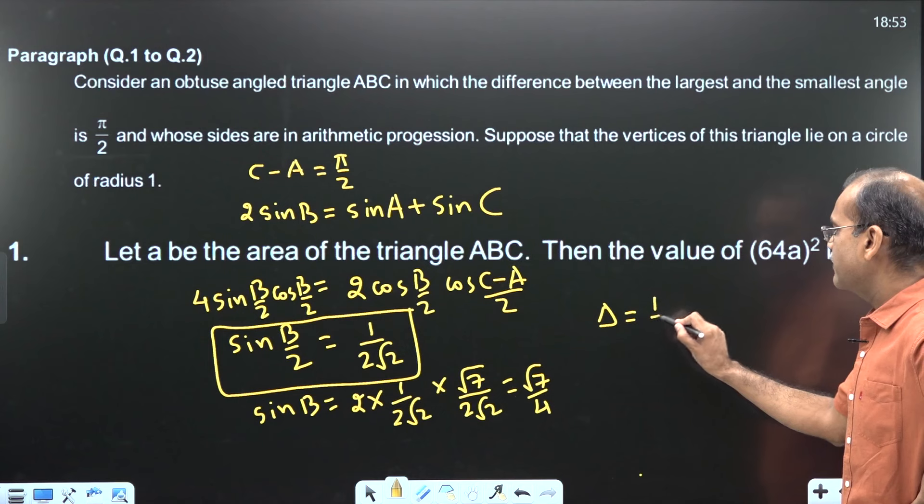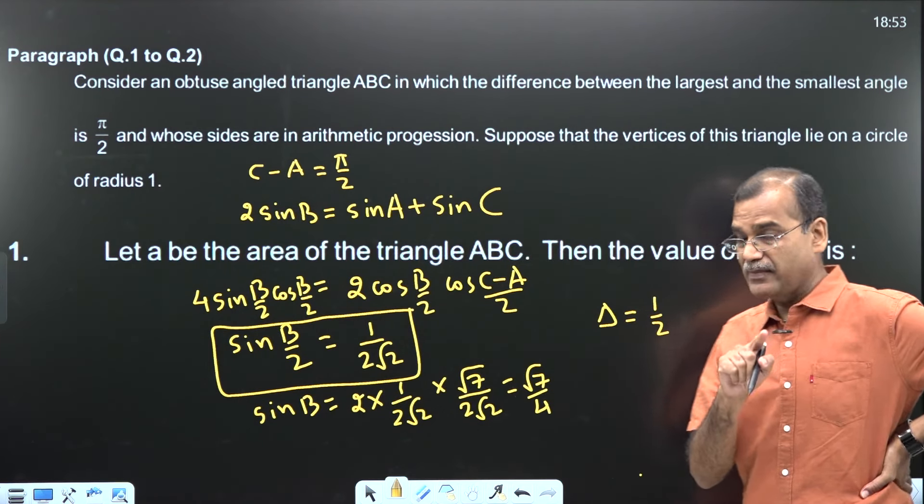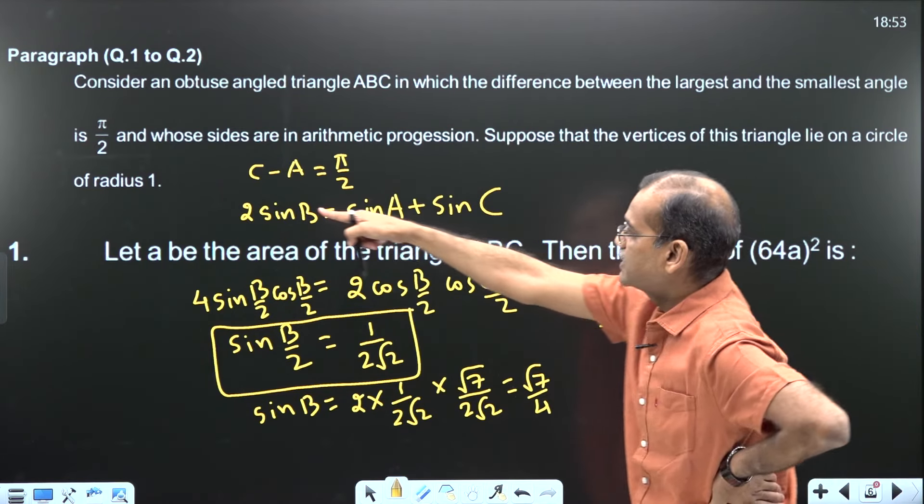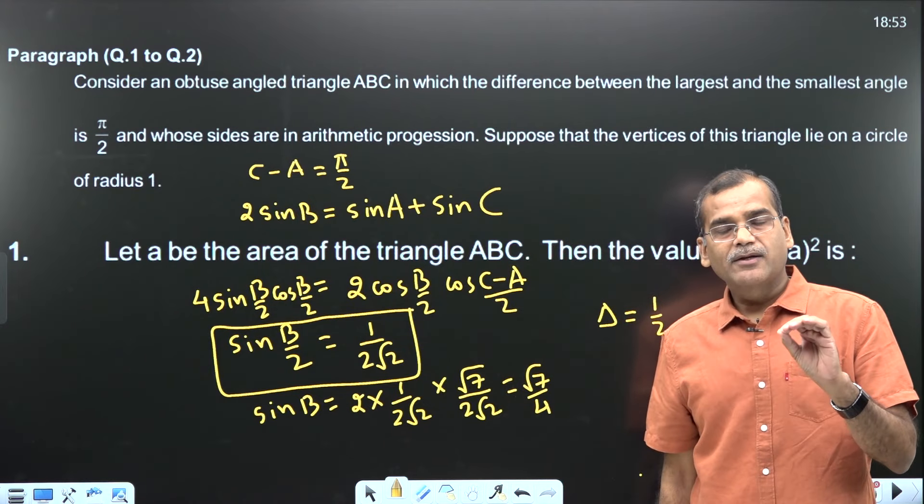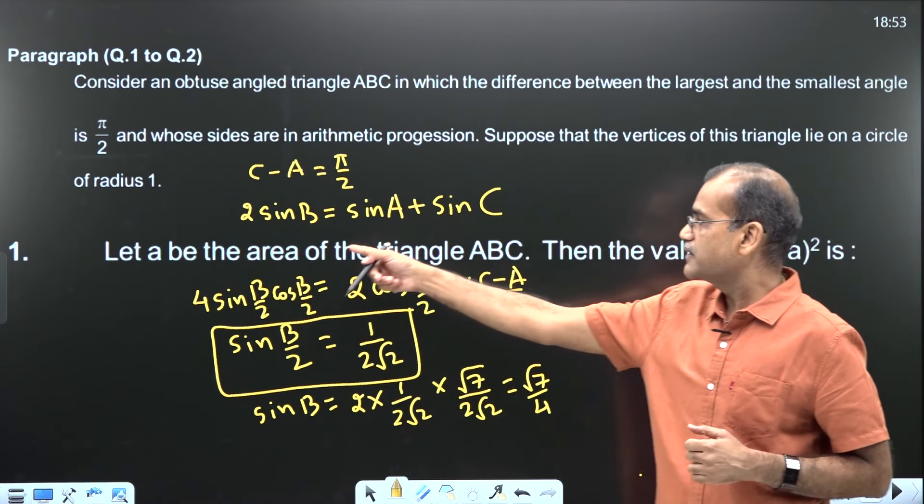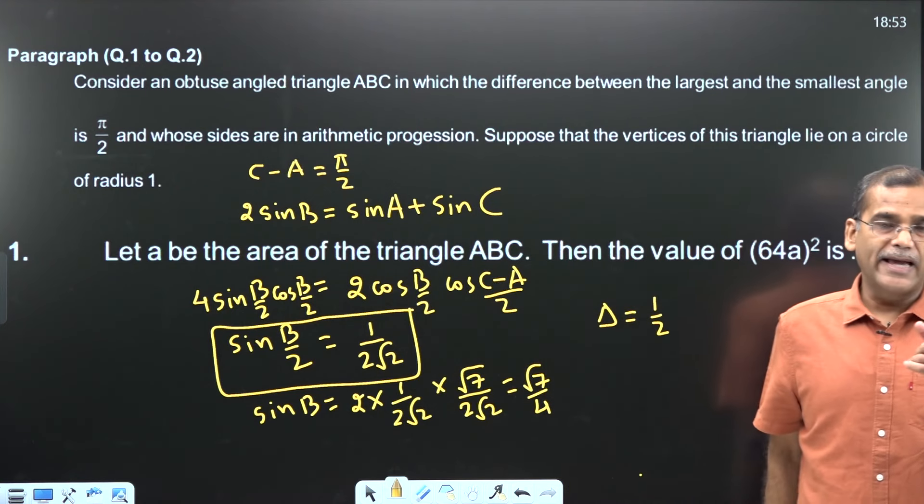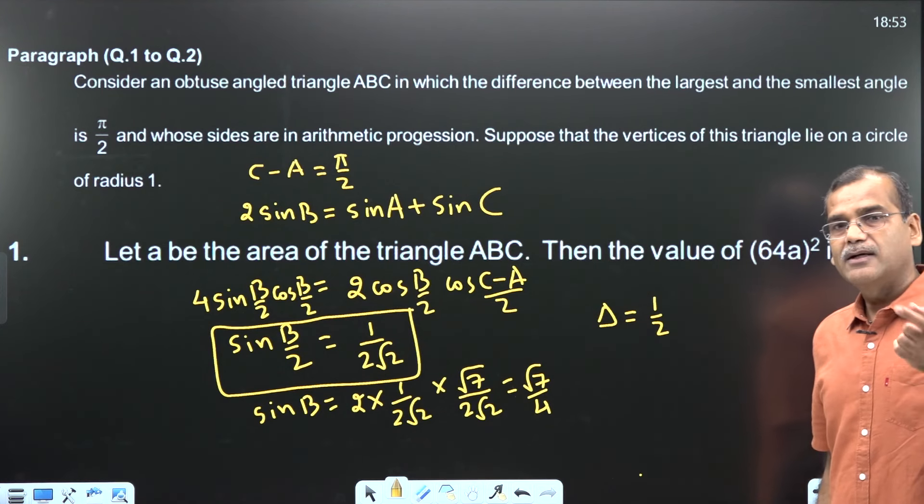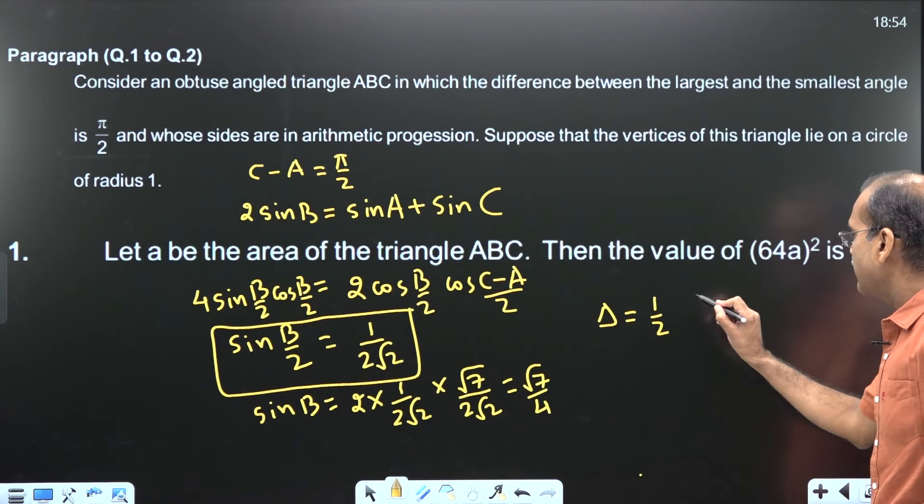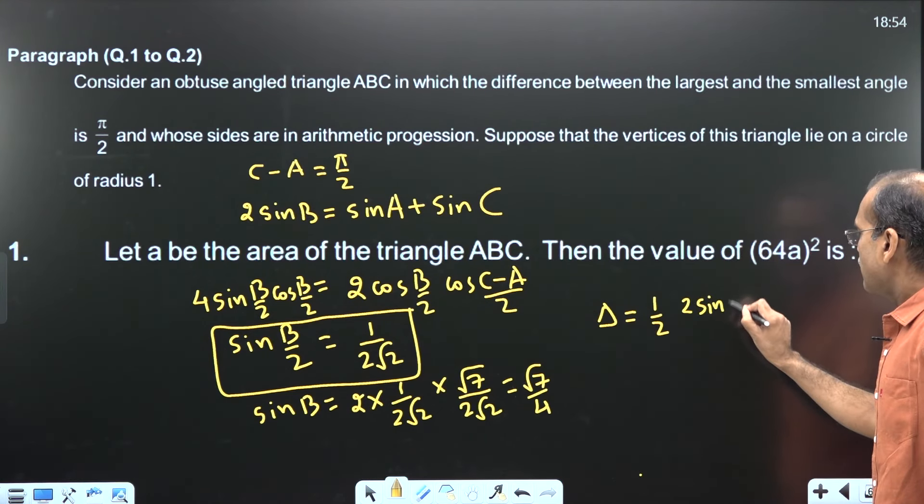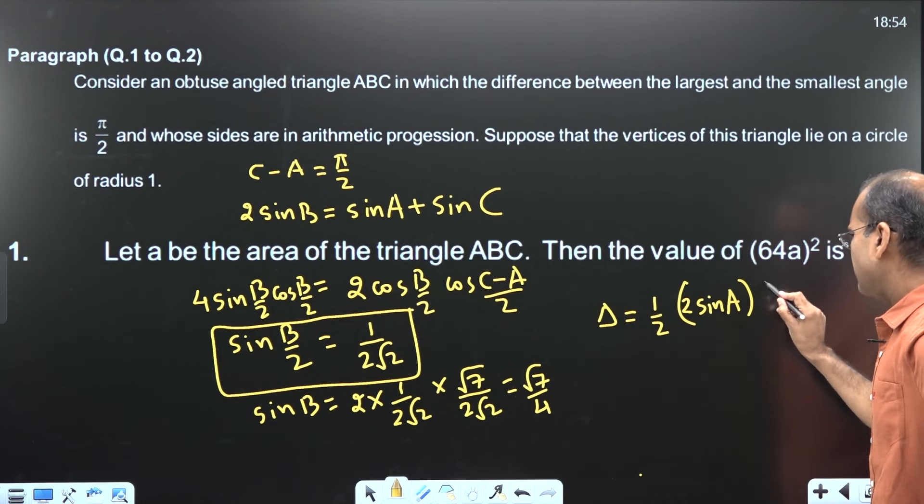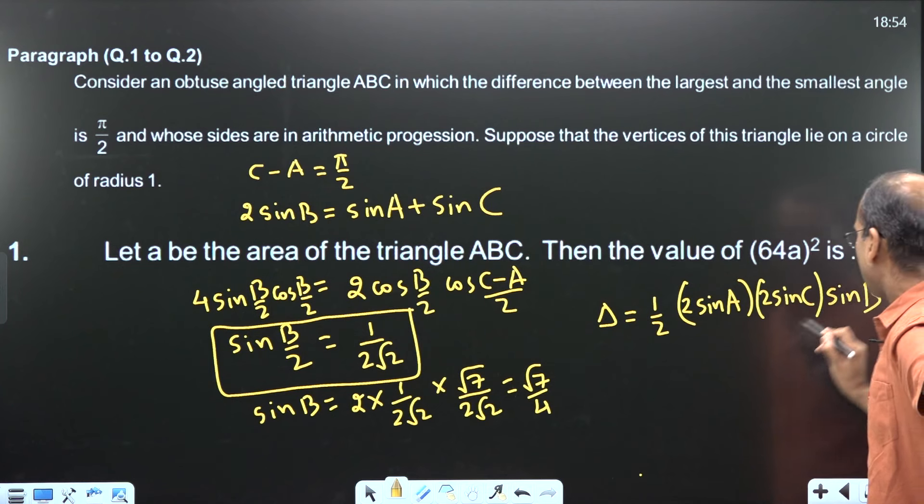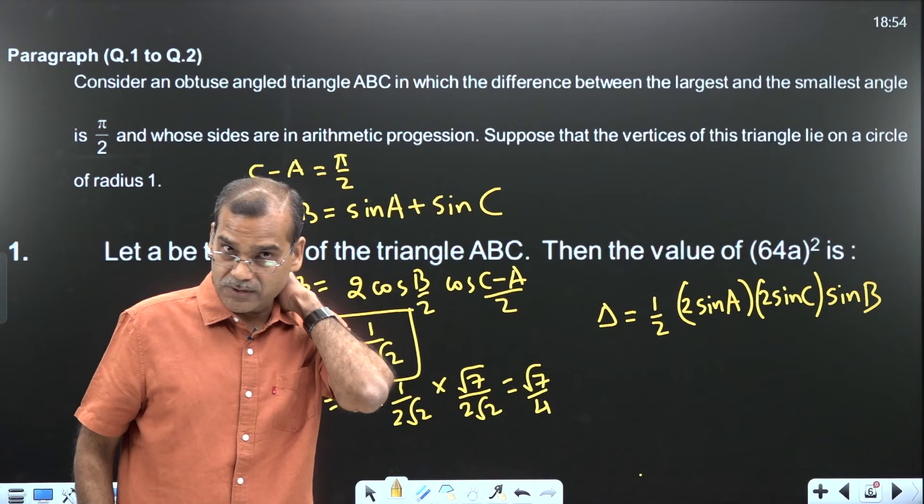Now area formula is half a times c sin B. I am using delta in place of small a. So delta is half a times c sin B. Don't you agree that capital R is given to us, which is 1. So I should convert small a into angles. Because the idea is clear - the whole problem should be manipulated in terms of angles. The angle relation is known. So half of a, which is 2R sin A, that is 2 sin A. And c, similarly, 2 sin C sin B. I have used capital R value of 1.